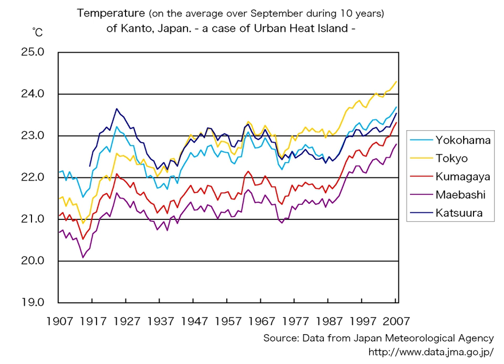Rainfall rates downwind of cities are increased between 48% and 116%. Monthly rainfall is about 28% greater between 20 to 40 miles downwind of cities compared with upwind, and some cities show a total precipitation increase of 51%. Research suggests metropolitan areas are less susceptible to weak tornadoes due to turbulent mixing. City climates have a noticeable influence on plant growing seasons up to 10 kilometers away, with growing seasons in 70 eastern North American cities about 15 days longer in urban areas. Research in China indicates UHI contributes to climate warming by about 30%.